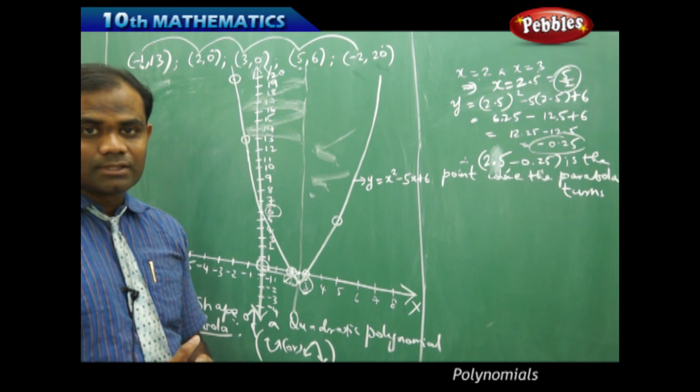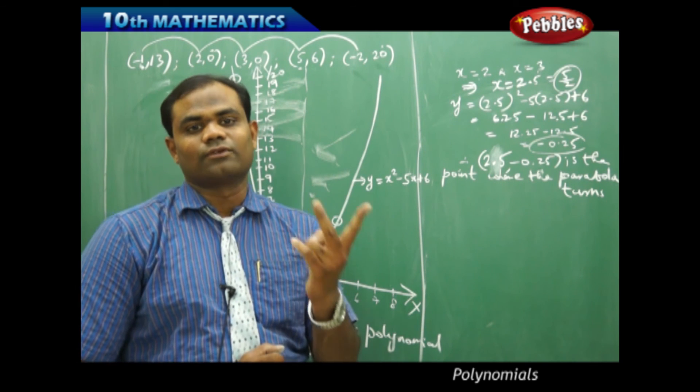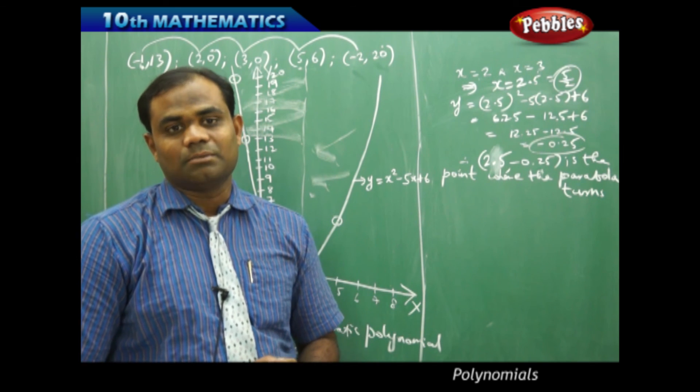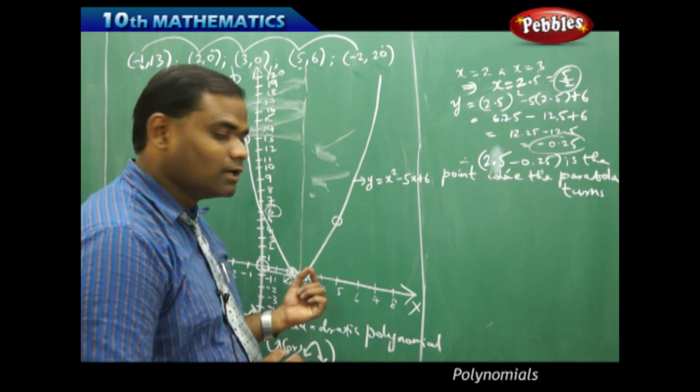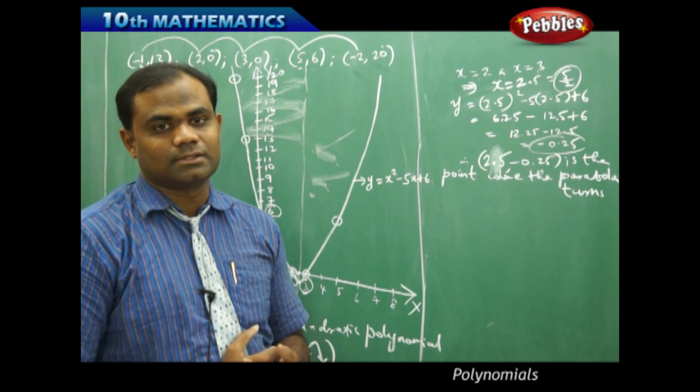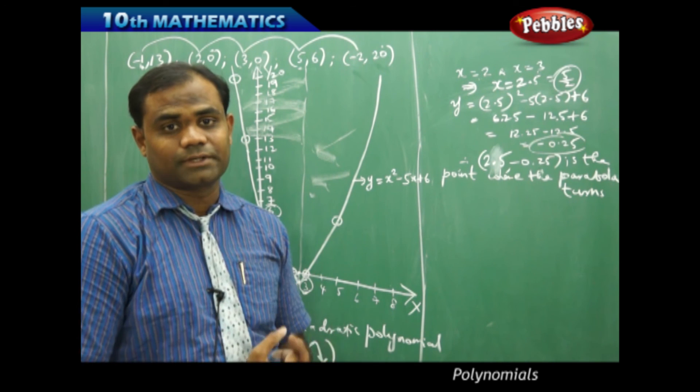So, always a quadratic polynomial has two zeros, therefore two x-intercepts. Sometimes, that x-intercept may converge to form one repeated x-intercept, which we are going to see in the next sessions.